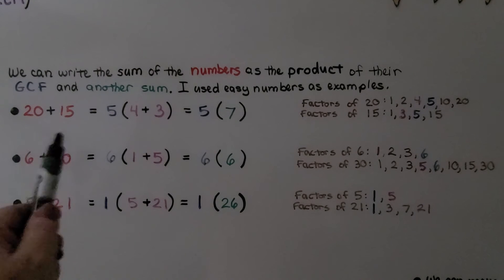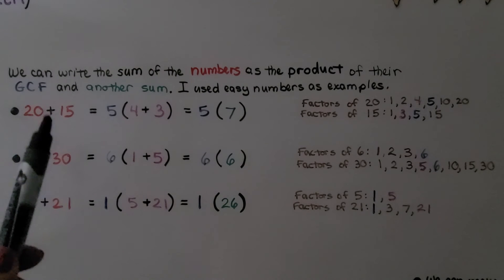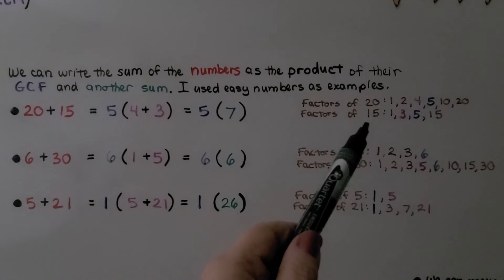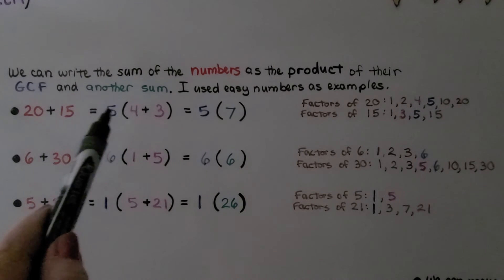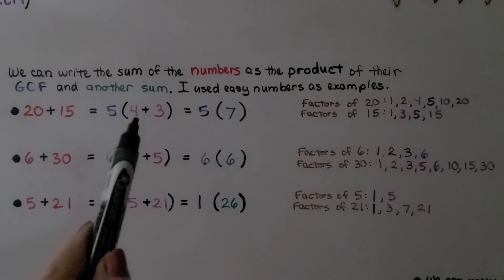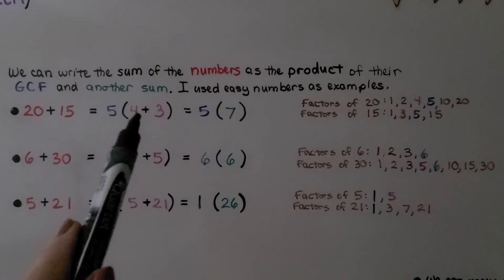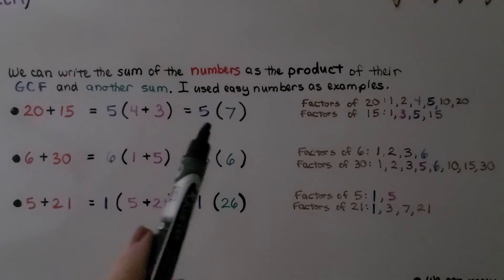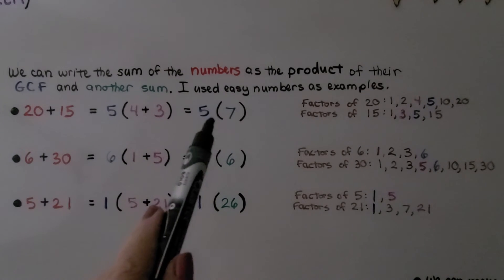We can write the sum of numbers as the product of their GCF and another sum. For 20 plus 15, we list factors of 20 and 15 and find their greatest common factor, which is 5. So 5 goes outside the parentheses. We need 5 times something to equal 20, which is 4, and 5 times something to equal 15, which is 3. That gives 5(4+3) = 5 times 7 = 35. And 20 plus 15 is 35 — correct!